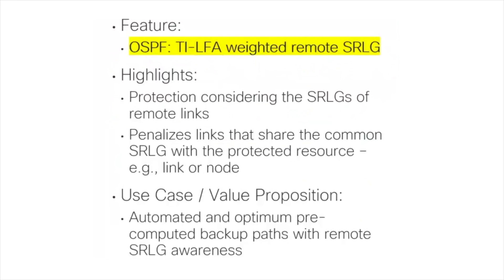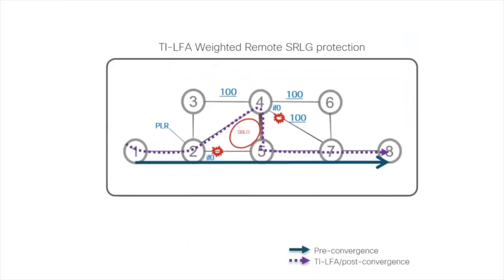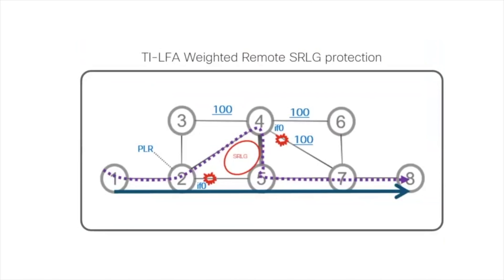The third feature introduces the latest type of protection for TI-LFA. We have been shipping TI-LFA in Cisco's implementation for ISIS and OSPF with rich protection types: link protection, node protection, local SRG protection. Now for OSPF we are introducing weighted remote SRG protection. In this case, a PLR like router two is trying to protect traffic on interface zero connecting to router five, but interface zero on router two and interface zero on router four are in the same conduit — the same pipe — and are therefore assigned to the same SRG.